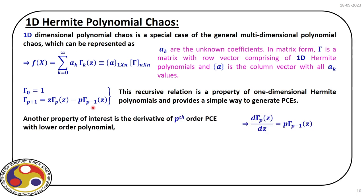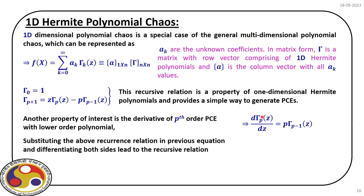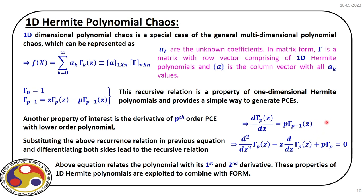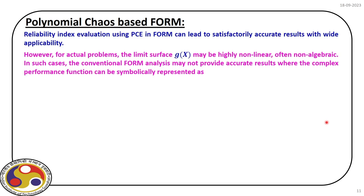The derivative of the Hermite polynomial has a specific form, which is very handy to obtain lower-order polynomials from the p-th order. Substituting this relation back gives an expression relating the first and second derivatives of the Hermite polynomial. These properties of 1D Hermite polynomials are exploited and combined with first-order reliability analysis, allowing us to replicate the limit surface and then apply FORM.